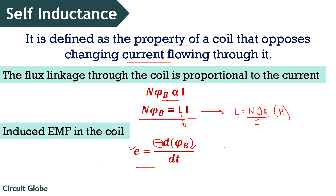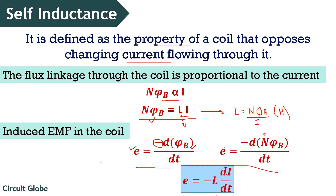Suppose we have N number of turns in the coil, so the expression will get modified as E = -d/dt (NΦB), where N is the number of turns in the coil. Since NΦB = L × I, on substituting the value, we get E = -L di/dt as the expression for induced EMF in the coil. This shows that the induced EMF depends upon the inductance of the coil along with the rate of change of current.